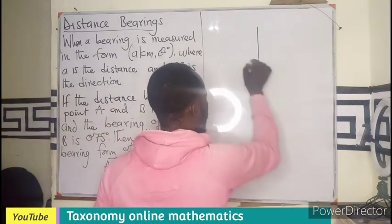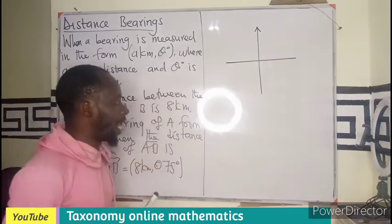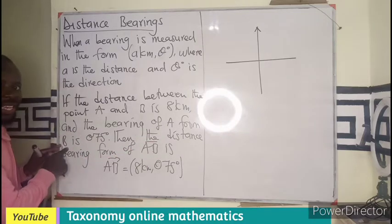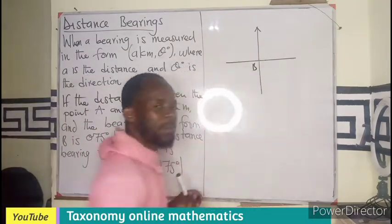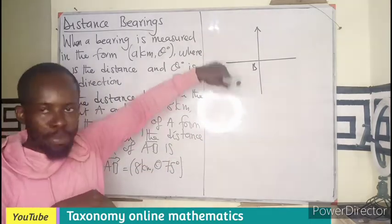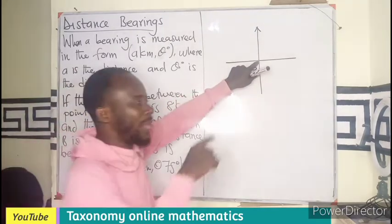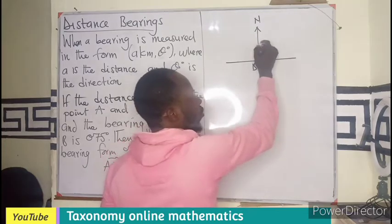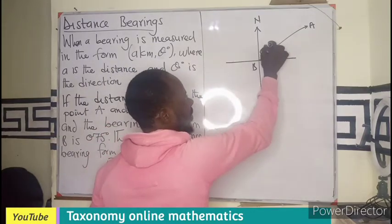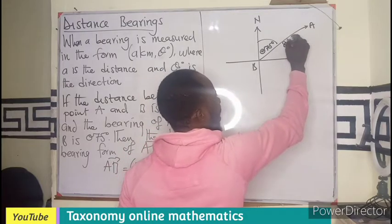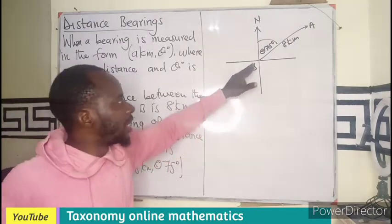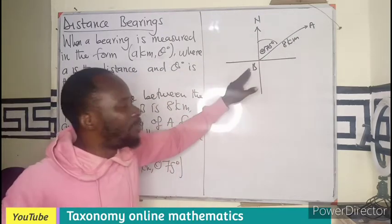We are saying that the bearing of A from B means the origin is B. From that origin point, we measure from the north side in a clockwise direction until we reach 75 degrees — that gives us point A. So on the diagram, the angle is 75 degrees and the distance is 8 kilometers.